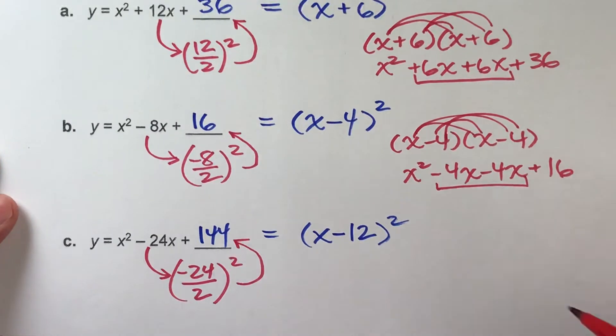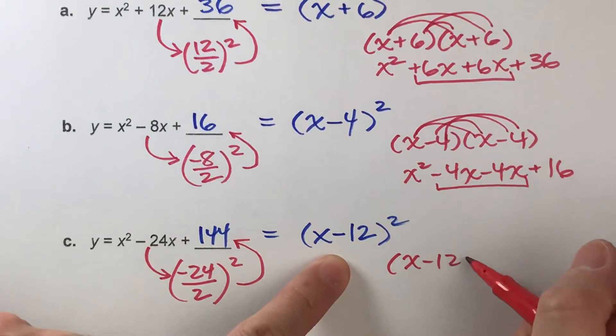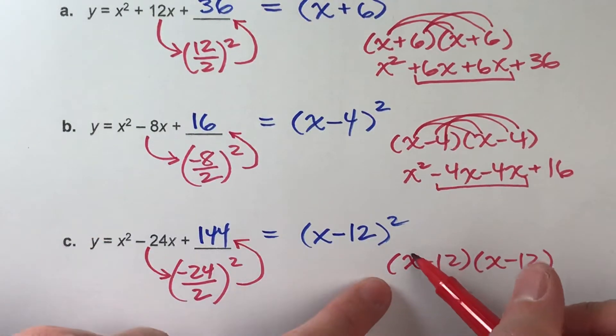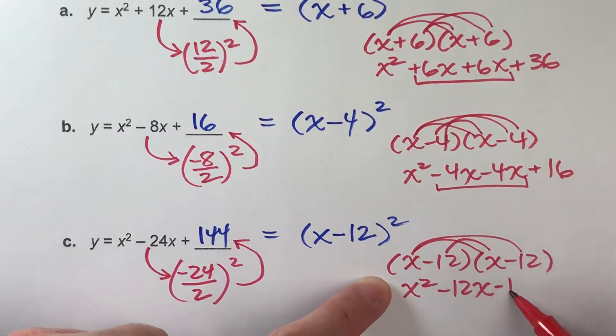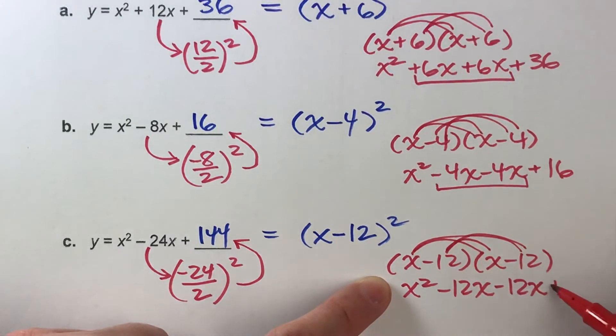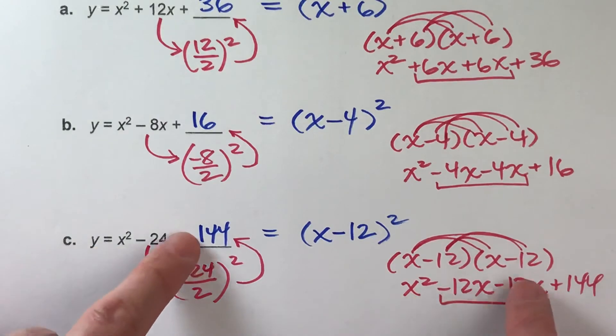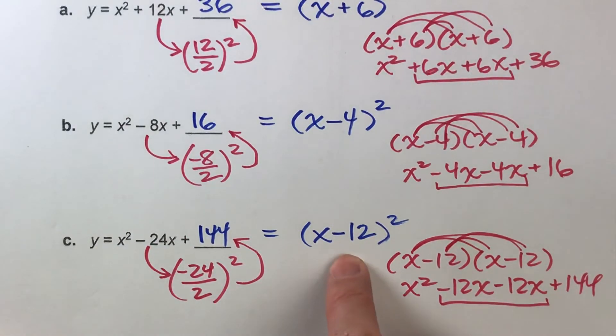And for the last time, we might as well check it since we checked all the other ones, just to make sure that x minus 12 squared really does equal this. If we combine our like terms, we will end up with x squared minus 24x plus 144. That works.